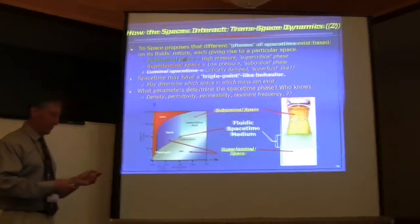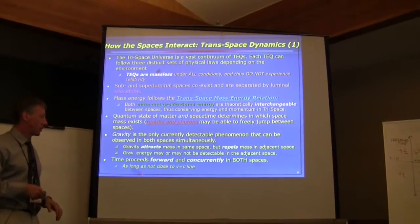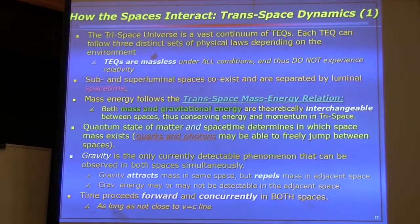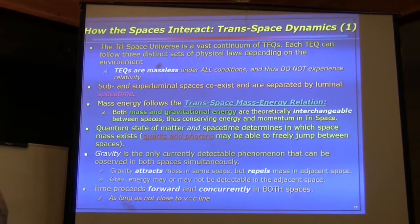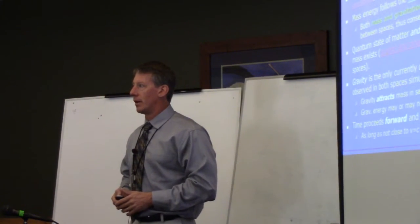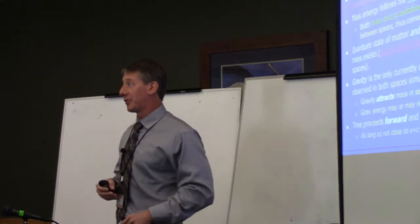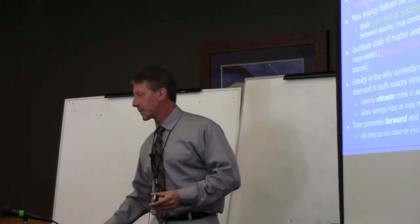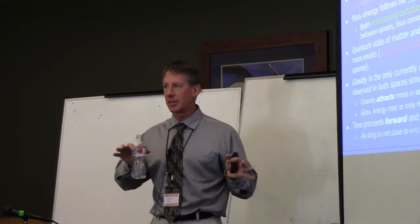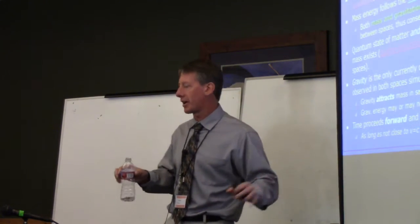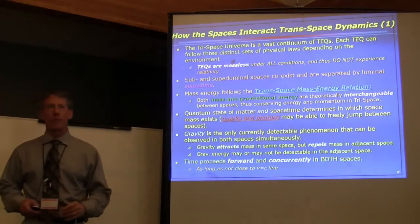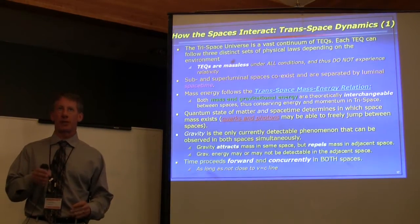Time proceeds forward and concurrently in both spaces, as long as it's not close to the speed-of-light line — that asymptote where time starts doing unusual things. There's no reason why time would ever go backwards as long as you stay within your realm of physical laws for your velocity. In simple terms: things that move faster than light are repelled by mass that is not moving faster than light, but attract other mass that is also moving faster than light.